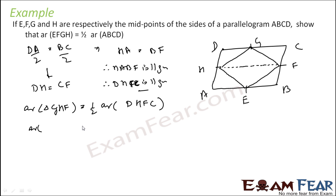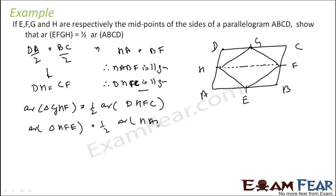Similarly, area of triangle HEF is equal to half of area of this parallelogram. Why? This is a parallelogram, this is a triangle, they have the same base, and the opposite vertices form a line which is parallel to HF. We use the same theorem.